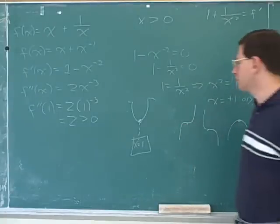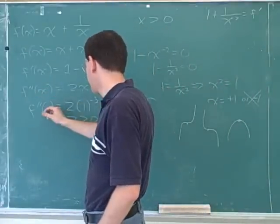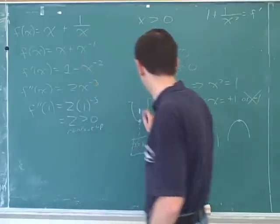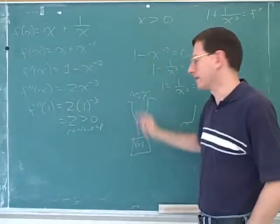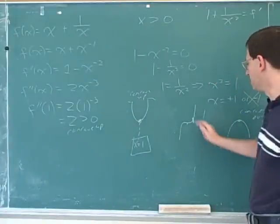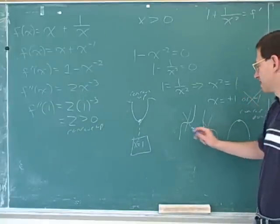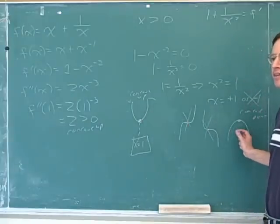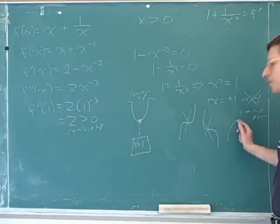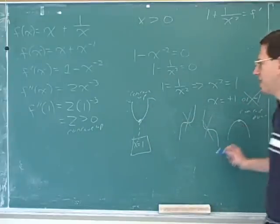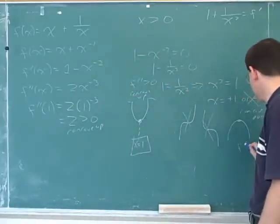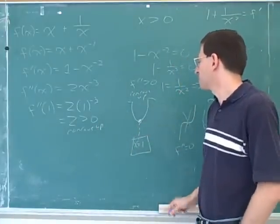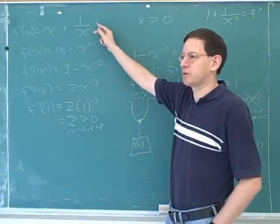The way to figure out which shape it is: use the second derivative test. When x is equal to one, the second derivative is positive. A positive second derivative means concave up. This is what concave up looks like — a local minimum shape. Concave down would be a local maximum shape. These are the two main cases to watch out for. The first derivative tells us the slope is zero, and then we use the second derivative to figure out whether it's concave up or concave down. Positive second derivative means concave up, which tells us this is a minimum — and that's exactly what they were asking us to find.